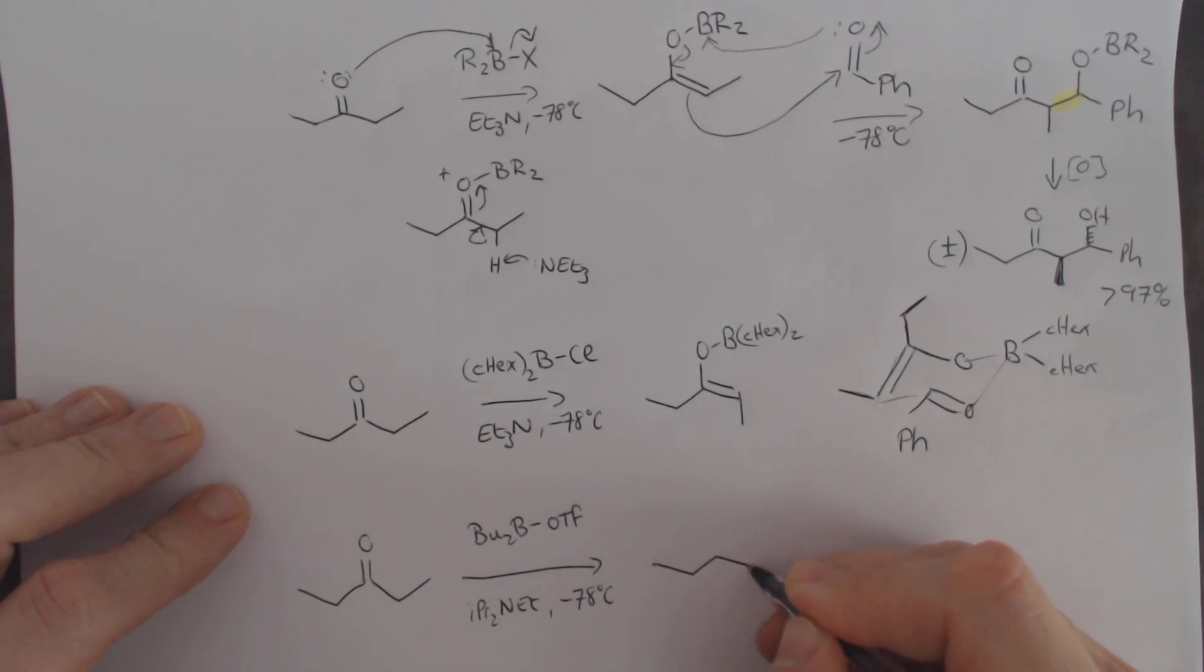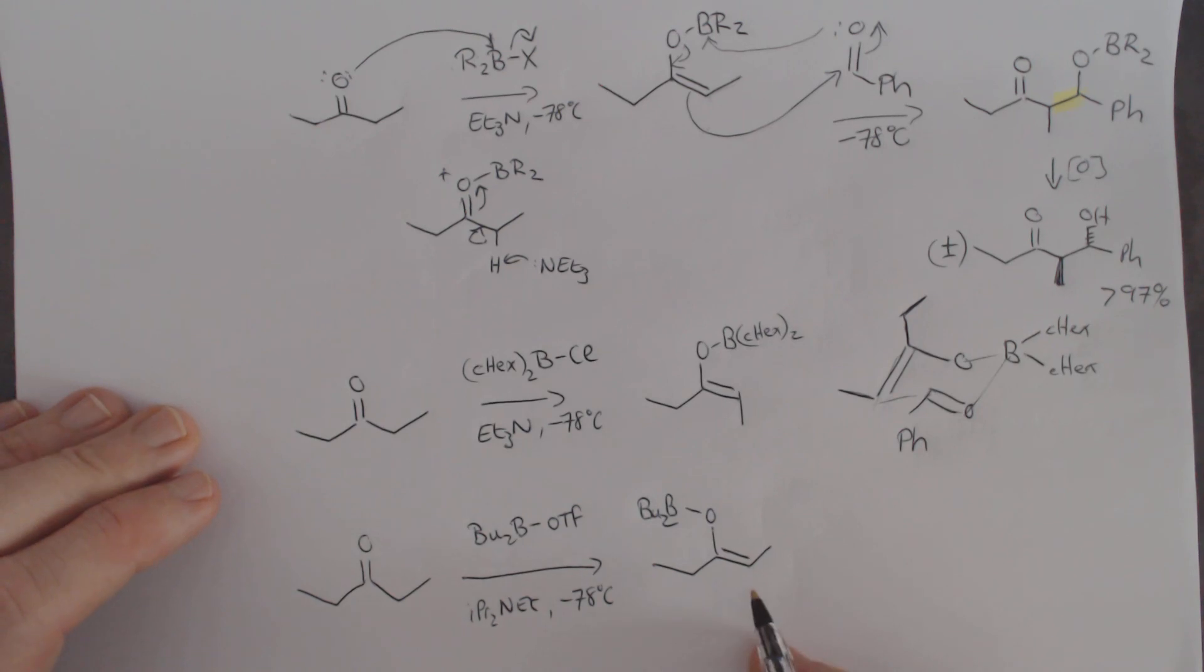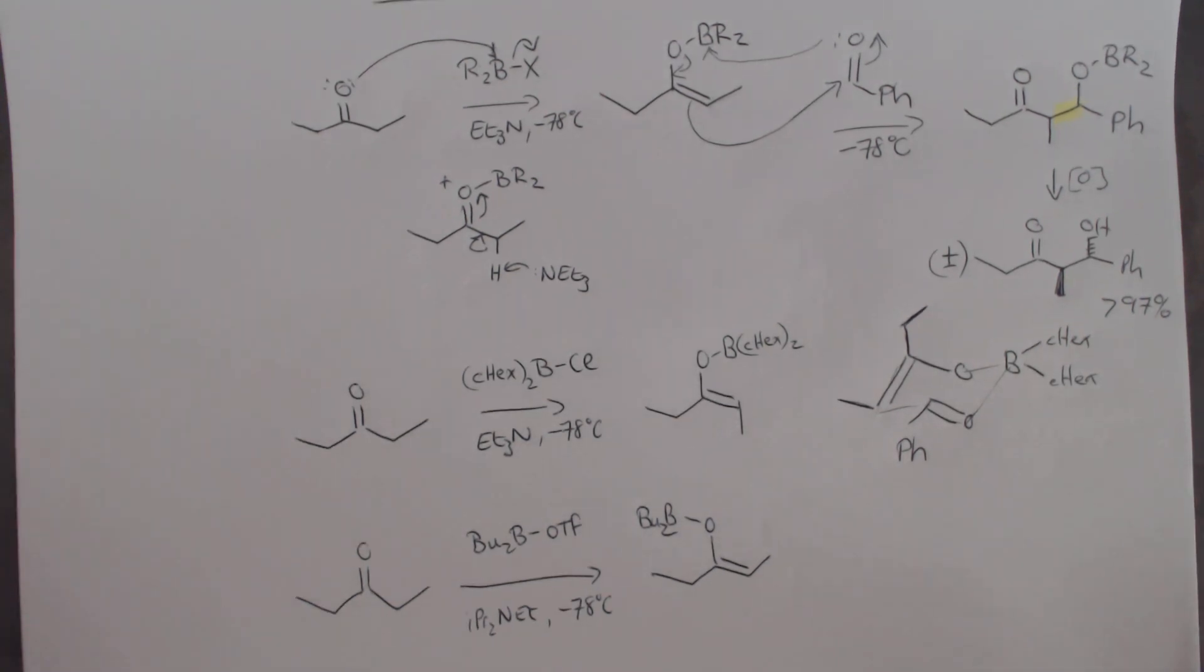And so here, the preferred boron enolate will be the cis one like that over there. And this we can plug into the Zimmerman-Traxler in exactly the same way, and there we'll see that we get the syn product at the end, obviously after oxidative workup.